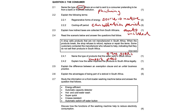2.5, explain the difference between an exemption clause and an unfair business practice. An exemption clause is in a contract and it exonerates or clears one party from any liability. An unfair business practice is when a supplier unfairly tries to influence or harass a consumer to do business with it.